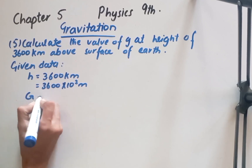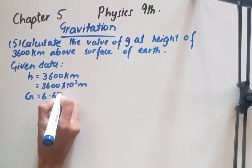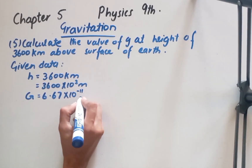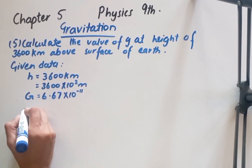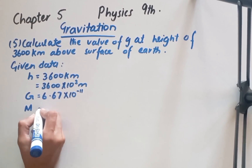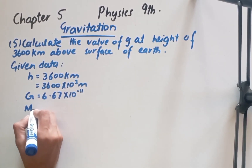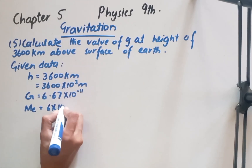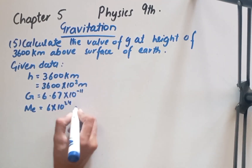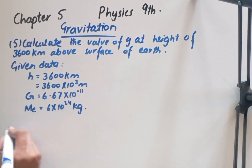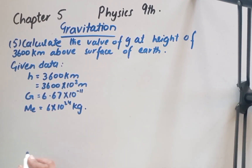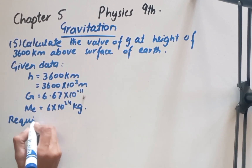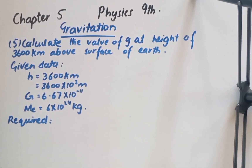We will use the gravitational constant G = 6.67 × 10⁻¹¹. The mass of earth used in this numerical is 6 × 10²⁴ kg. The required value to find is gravitational acceleration g.